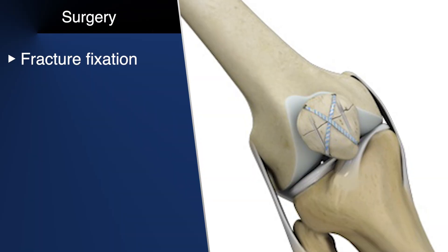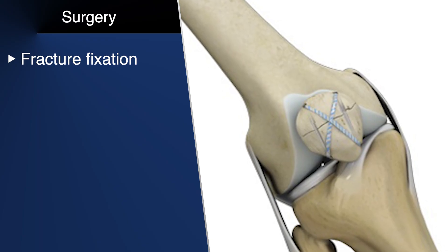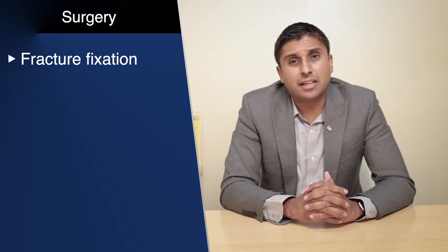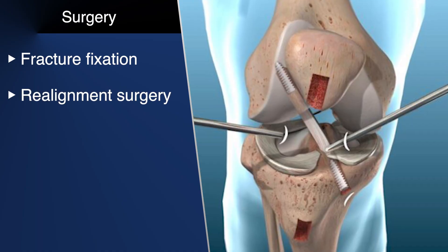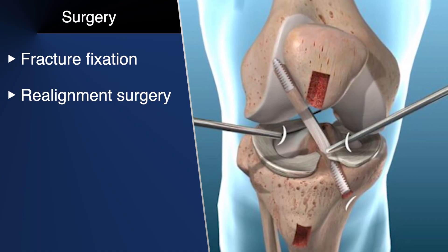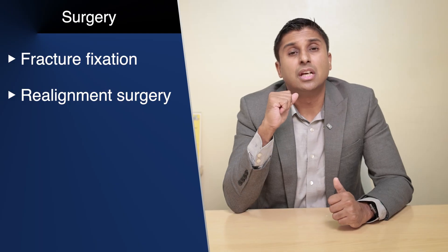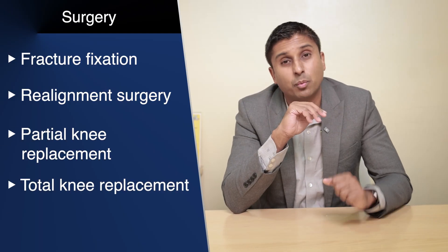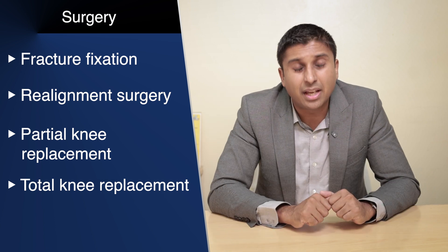What operations are likely? If it's a fracture, you do fracture fixation with plates, nuts, bolts, and rods. If it is degeneration, you may have a realignment surgery if you're young — to push body weight away from the damaged compartment — or you may have a partial or total knee replacement, where you put a substitute for the cartilage that's gone away. You could also have an arthroscopic or keyhole operation if it's a ligament or meniscus issue.